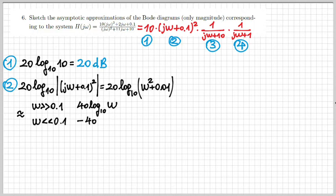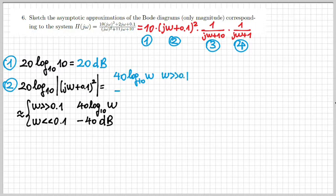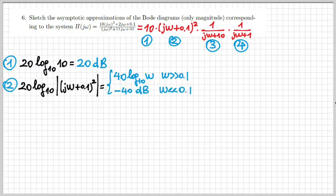We can approximate that: when ω is much larger than 0.1, ω prevails and we approximate this with 40 log₁₀ ω. In the other case, when ω is much smaller, we obtain minus 40 dB constant. Let's take note of this result.